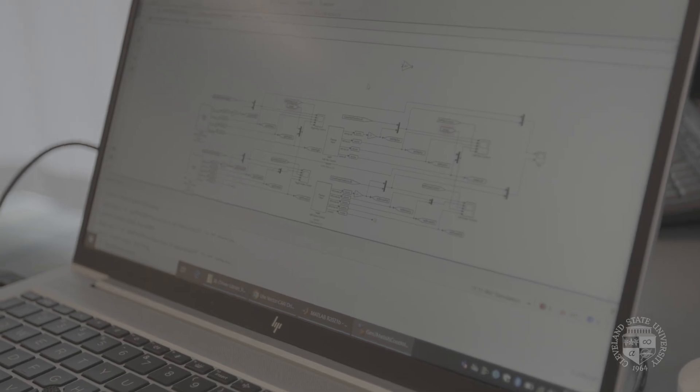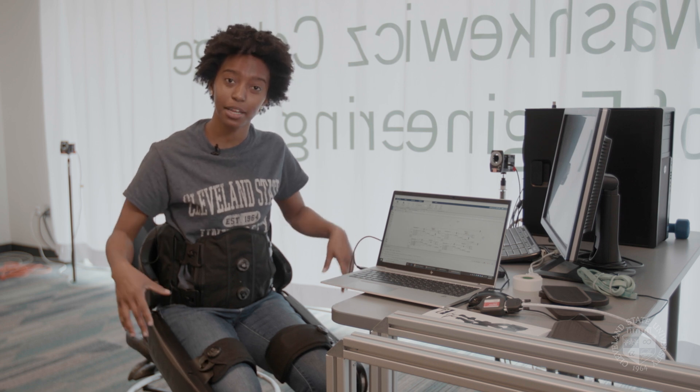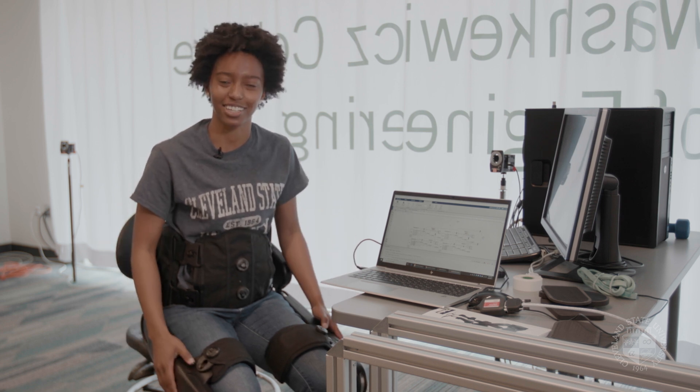Currently in the center we are working on the indigo exoskeleton. This is an exoskeleton used for lower limb patients who experience paralysis. Here's my code here. Typically you will be able to catch yourself if you fall but people who have paralysis aren't able to do that so that's what we're going to try to emulate within our exoskeleton.